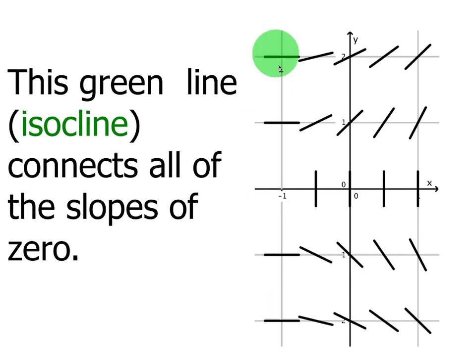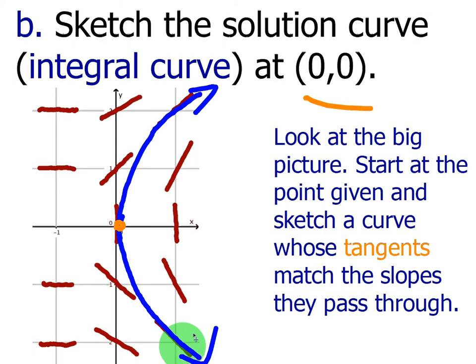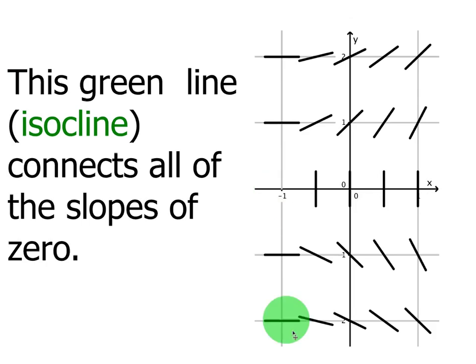And so what you want to do with an isocline line is just connect all these slopes. It doesn't have to hug them like the integral curve did right here where the curve followed the slope's tangents. No, it doesn't do that. What it does is just connect them. So how would you connect these four horizontal lines? Well, the best way to do it would be with this vertical line right here, and this line would be the isocline.